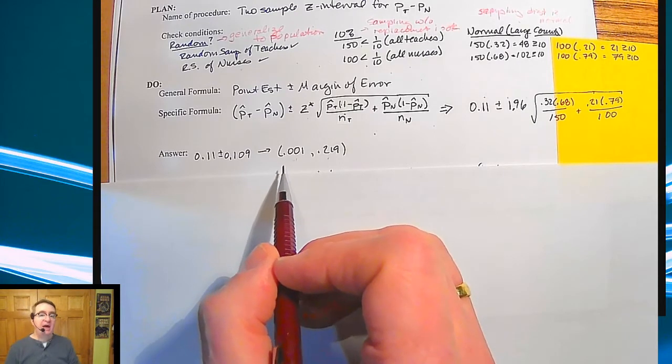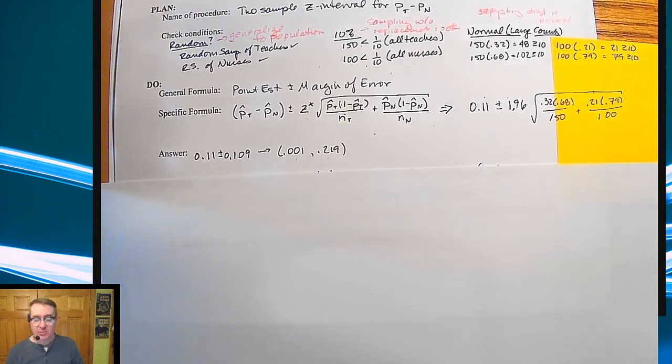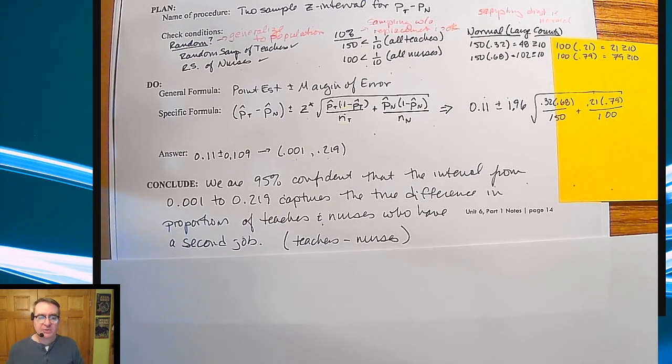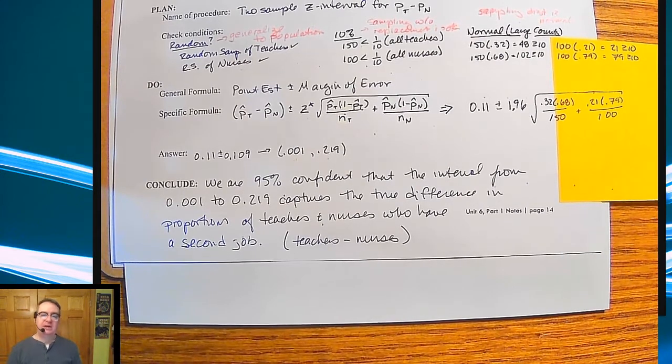So it's very clear that at the very least that may be equal, but for sure, teachers tend to have more proportions. Greater proportion of teachers tend to have second jobs than nurses. So to that end, let's conclude this. We are 95% confident that the interval from 0.001 to 0.219 captures the true difference in proportion of teachers and nurses who have a second job.